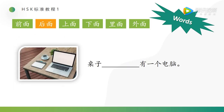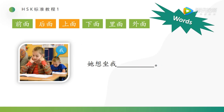桌子有一个电脑 — this is 桌子, this is 电脑. So which one should we choose? Yes, 桌子上面有一个电脑 — 上面, on, on the table. 他想坐我前面 — this is 我, this is 他. 他想坐我前面. 前面 — in front of me.